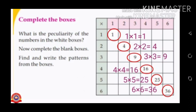That is: 1 into 1 is equal to 1. Second line: 2 into 2 is equal to 4. Third one: 3 into 3 is equal to 9. 4 into 4 is equal to 16. Fifth one: 5 into 5 is equal to 25. And last one: 6 into 6 is equal to 36.